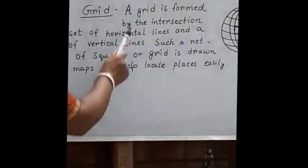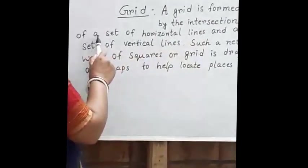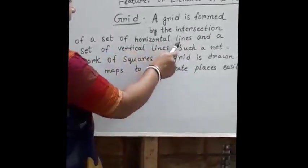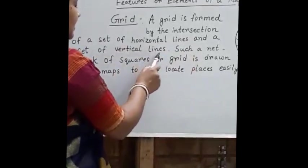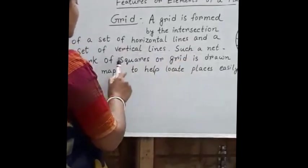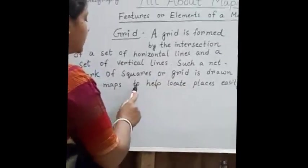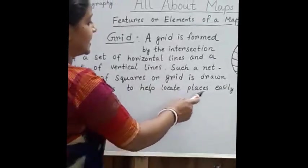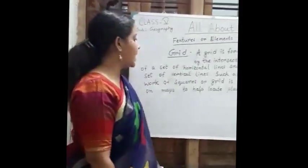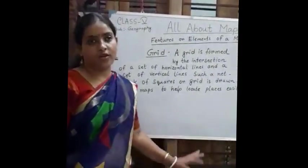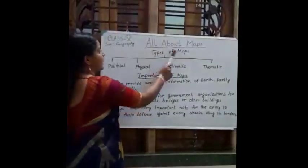A grid is formed by the intersection of a set of horizontal lines and a set of vertical lines. Such a network of squares or grid is drawn on maps to help locate places easily. In order to locate the place easily, this kind of grid is drawn on a map.